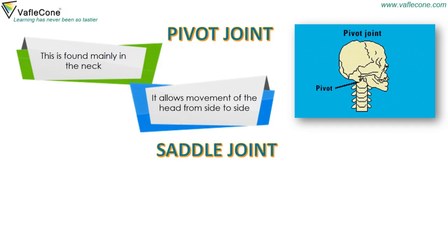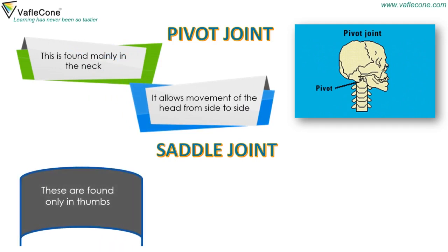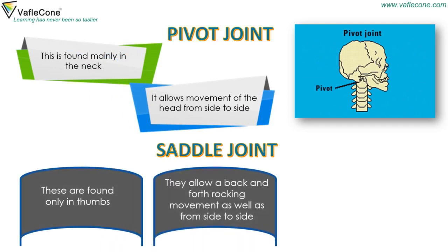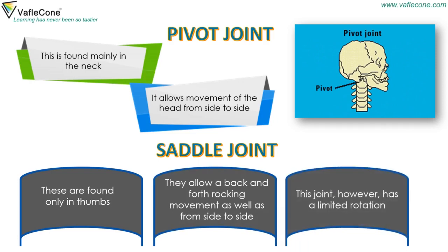Saddle Joint. These are found only in the thumbs. They allow a back-and-forth rocking movement as well as from side to side. This joint however has a limited rotation.